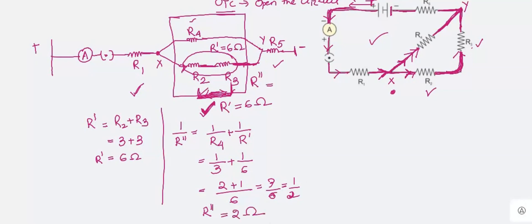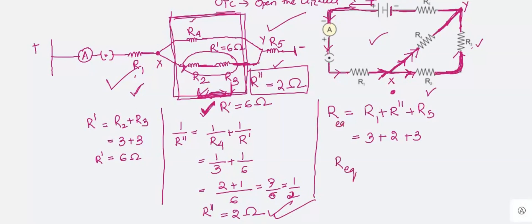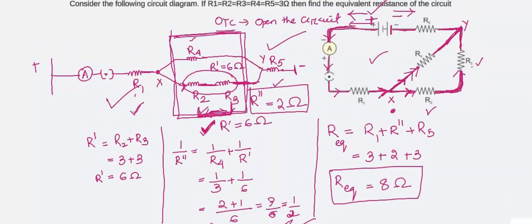The equivalent resistance of the parallel combination is 2 ohm. Now R double dash, R1, and R5 are all in series with each other. The total equivalent resistance of the circuit = R1 + R double dash + R5 = 3 + 2 + 3 = 8 ohm. So the equivalent resistance of the circuit comes to be 8 ohm.